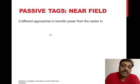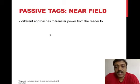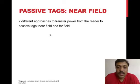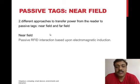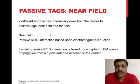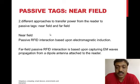When passive tags are used, there are two different approaches to transfer power from reader to passive tags. These two different approaches are near field and far field. The major advantage of far field tags is that they can signal information over greater distances compared to near field, as the name suggests.